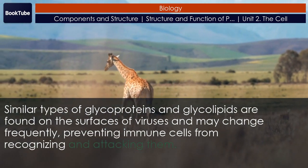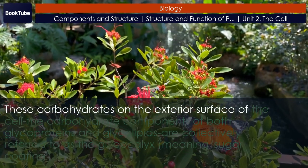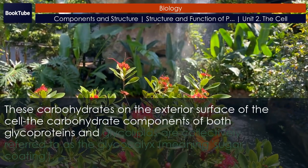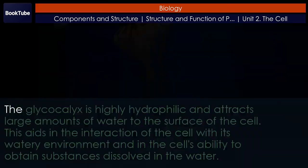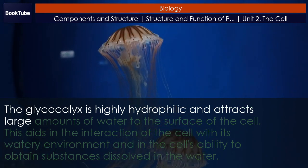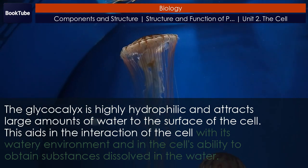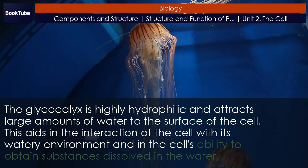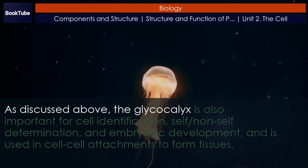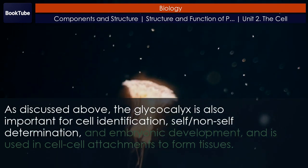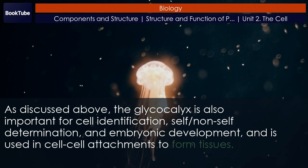Similar types of glycoproteins and glycolipids are found on the surfaces of viruses and may change frequently, preventing immune cells from recognizing and attacking them. The carbohydrate components of both glycoproteins and glycolipids are collectively referred to as the glycocalyx, meaning sugar coating. The glycocalyx is highly hydrophilic and attracts large amounts of water to the surface of the cell, aiding in the cell's interaction with its watery environment. The glycocalyx is also important for cell identification, self/non-self determination, embryonic development, and cell-cell attachments to form tissues.